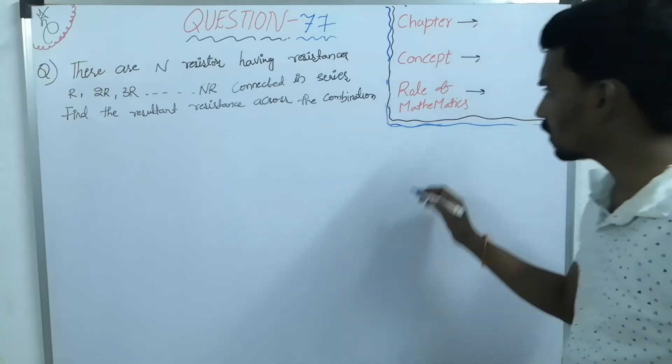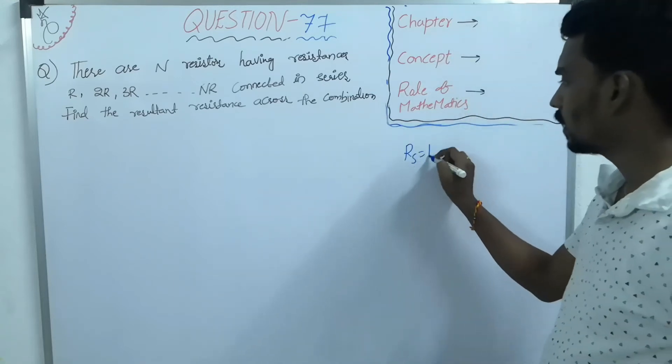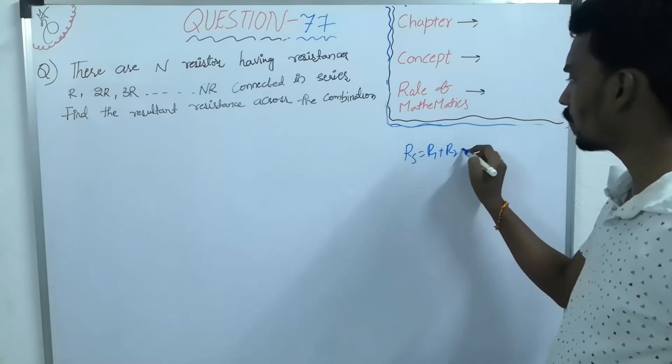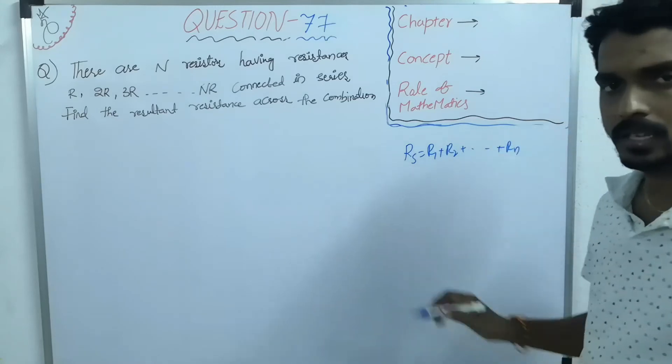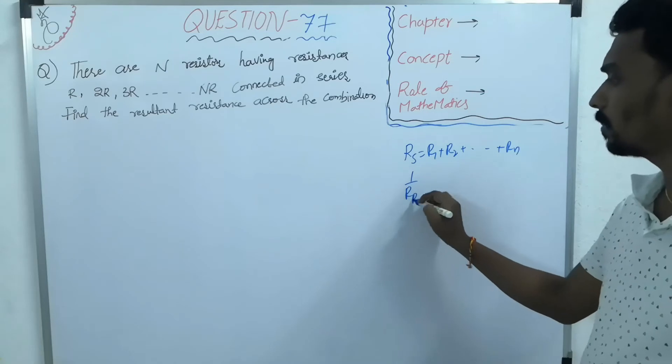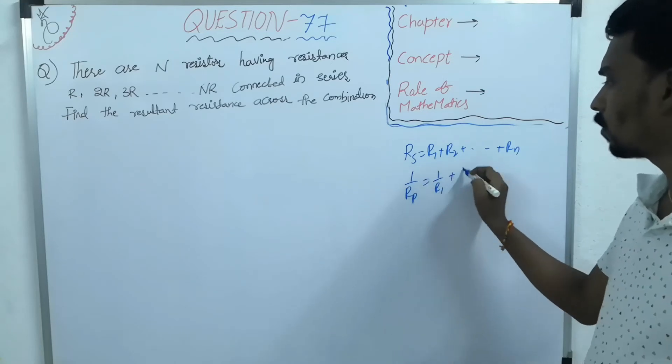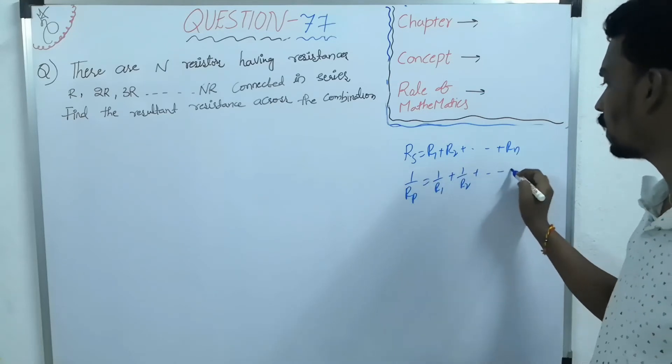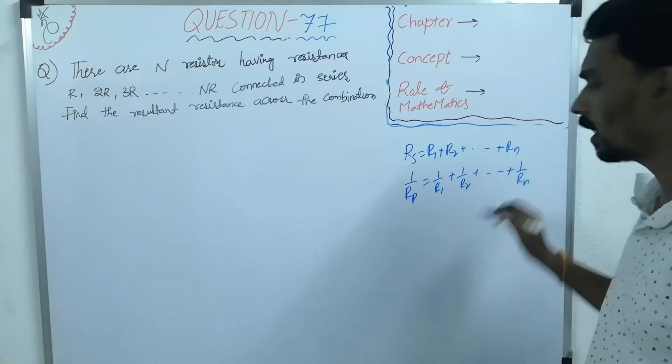If resistors are connected in series, then the resultant resistance is R1 plus R2 plus up to Rn. If resistors are connected in parallel, 1 by Rp equals 1 by R1 plus 1 by R2 plus up to 1 by Rn.